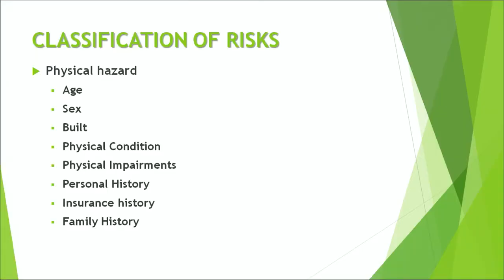Family history is again a part of personal history, where you talk about any major ailments you have suffered from, or life-threatening diseases like cancer which might recur because of their presence in your genes. All these kinds of risks come under physical hazard and have to be disclosed to the insurance company when filling up the personal statement along with the proposal form.